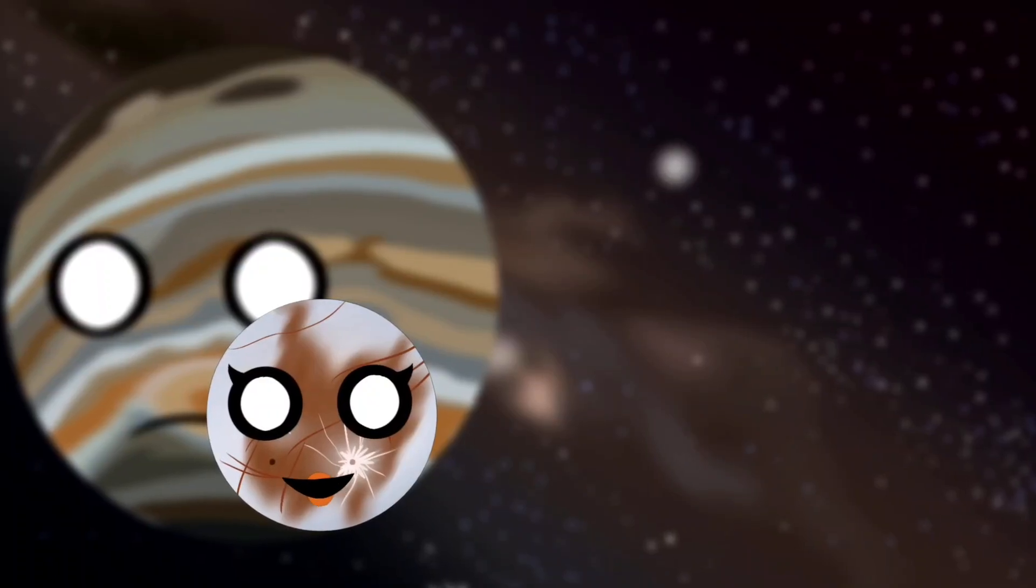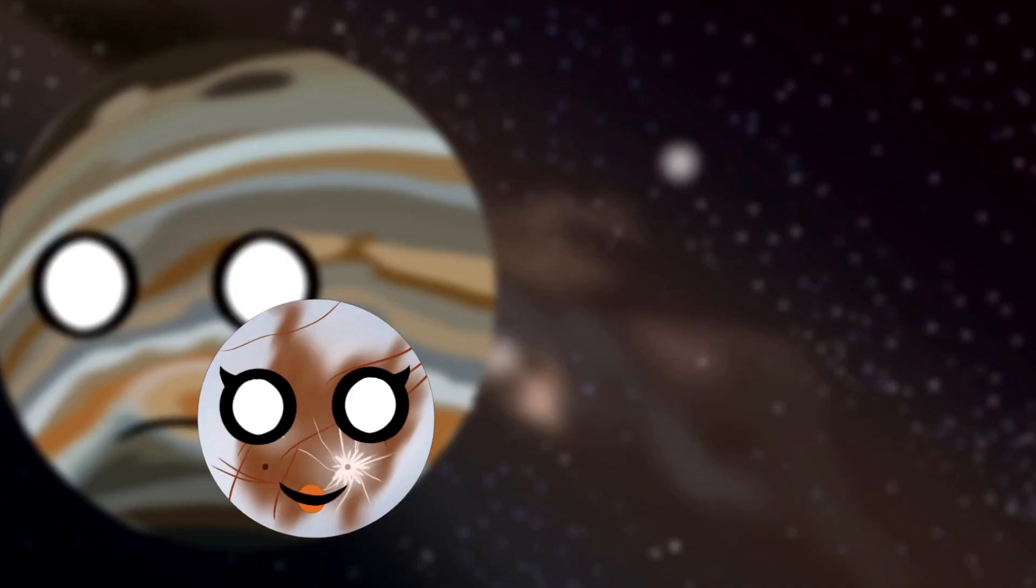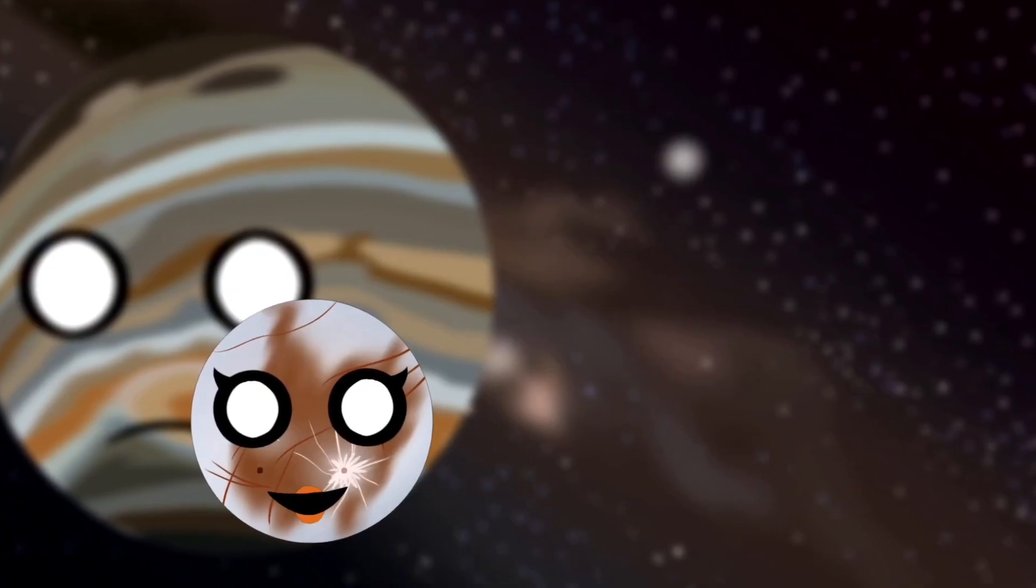After I become the Earth's moon, my new orbit will be in the habitable zone, and my ice will melt. My chances of sustaining life will significantly increase.